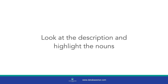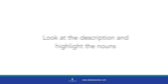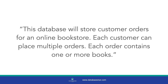Now that you have your description, the next step is to look at the description and highlight the nouns. These are often the first clues to your database tables. The nouns are words that represent things — they are the entities in the real world and they often become tables in the database. In this example, the nouns are customer, order, and book.